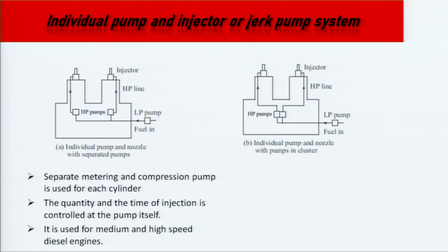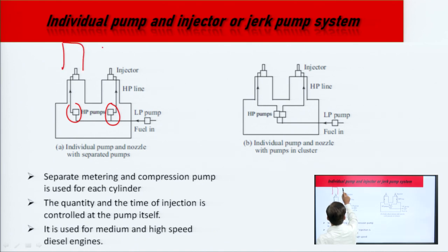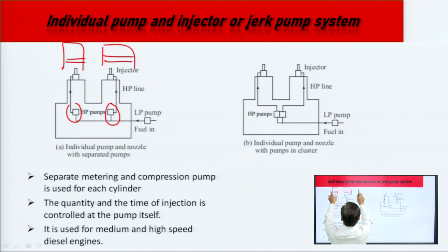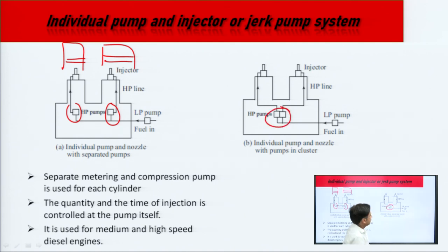In the individual pump and injector or jerk pump system, a separate metering and compression pump is used for each cylinder. The quantity and timing of injection is controlled at the pump itself. It is used for medium and high-speed diesel engines. As seen in the diagram, different high-pressure pumps are used for different cylinders, with individual injectors for each cylinder. If the pump is a jerk type, it is known as a jerk pump system. Pumps may be individual or used in cluster form, but injectors are separate for each cylinder.